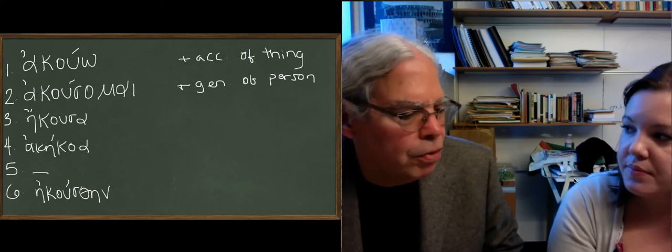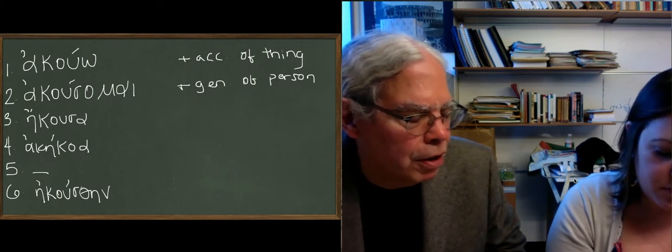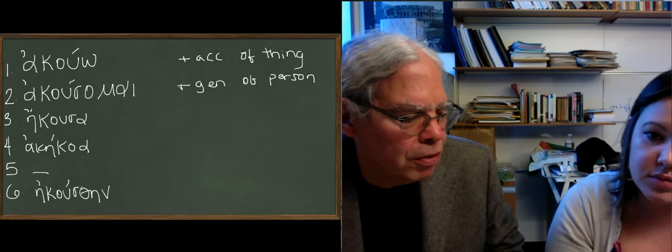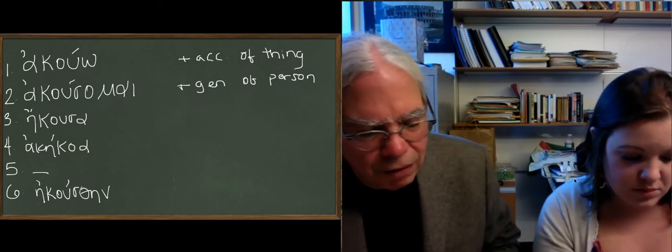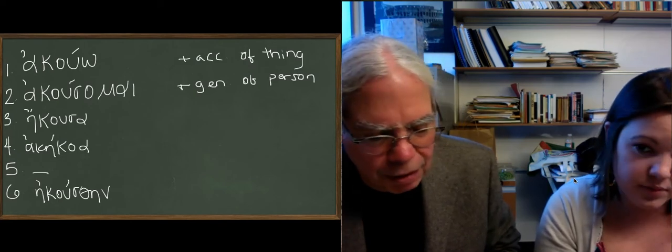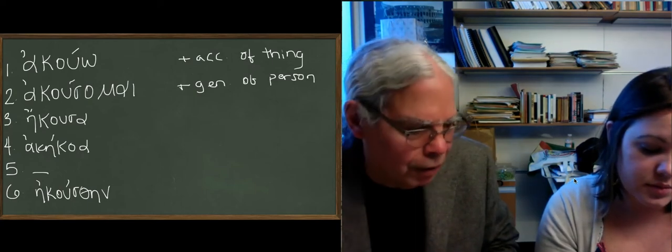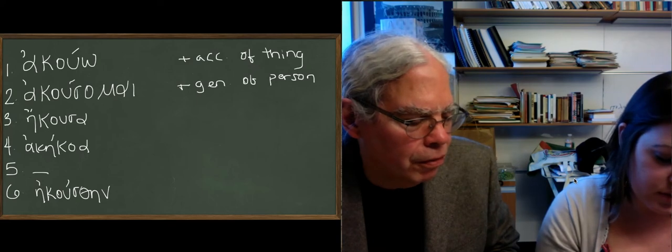And then there's this funny use of it in the passive. This verb doesn't really have a middle except in the future. And when it's passive, when it has middle endings, it's almost always passive. Notice that it doesn't have a perfect passive form. But you have aorist passive, and the present and the imperfect can be passive forms.